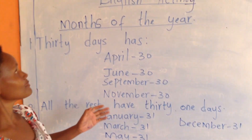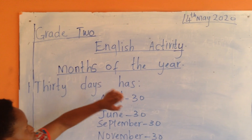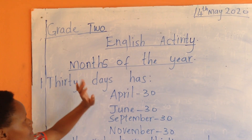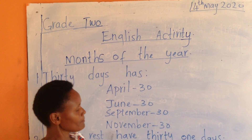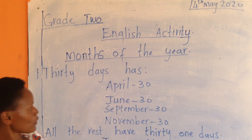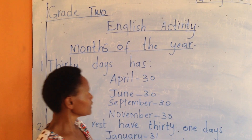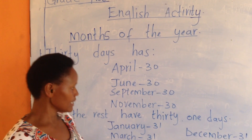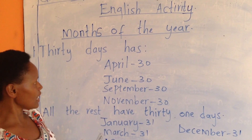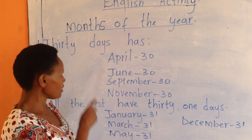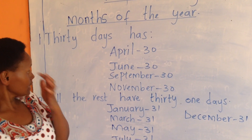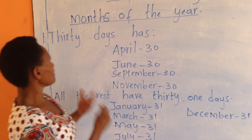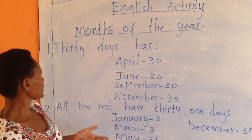Good afternoon, learners. I'm going to teach an English activity about the months of the year. Remember, learners, on our previous lesson we said there are 12 months in a year. Remember, every month of the year must start with a capital letter. Today we want to see the months of the year but in a different way.